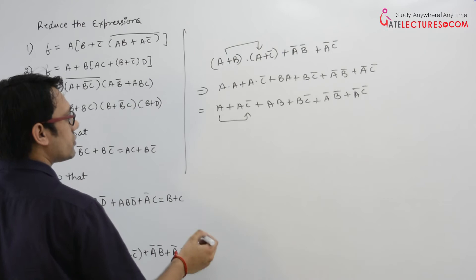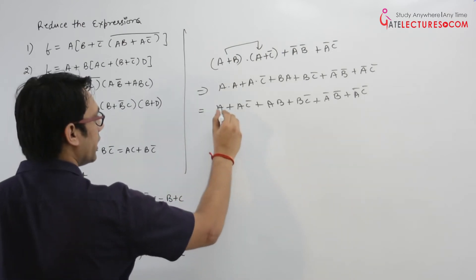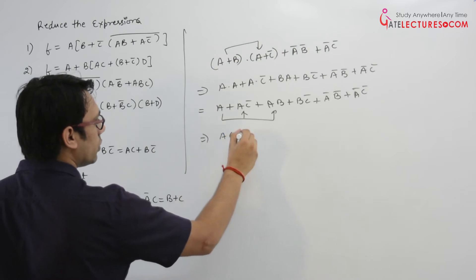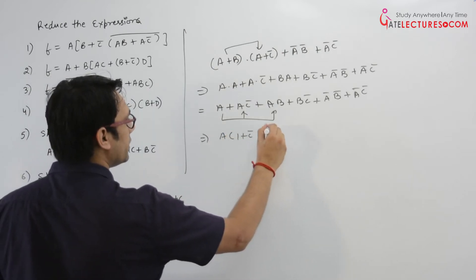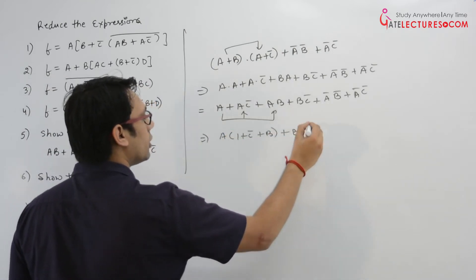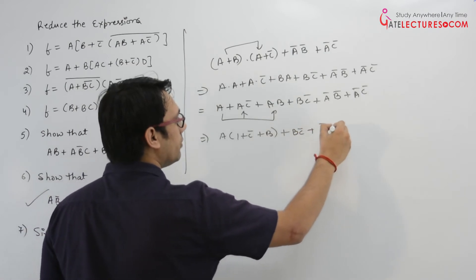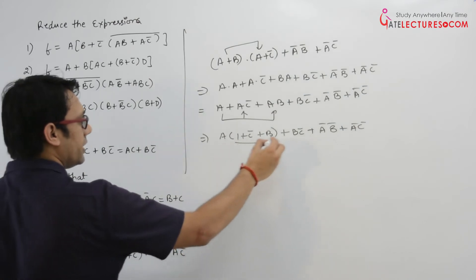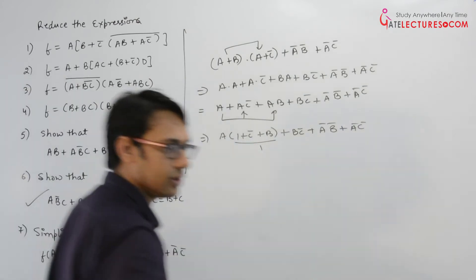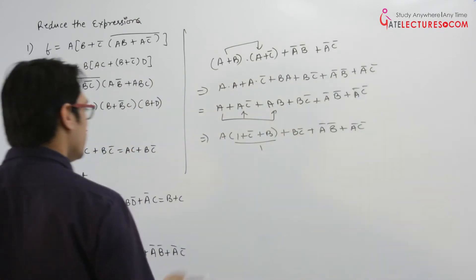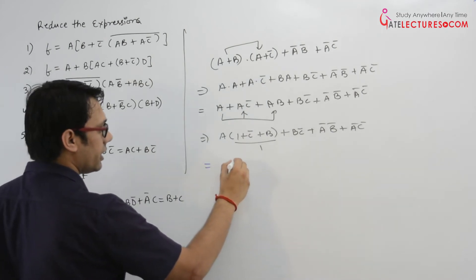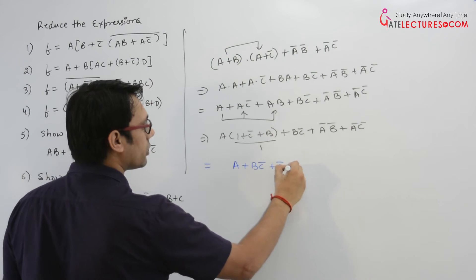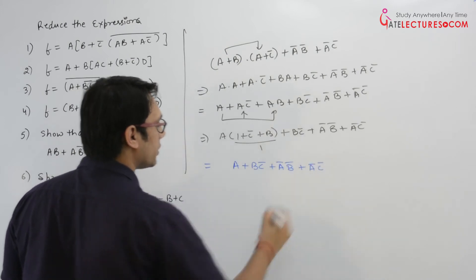You can take A as common between these two, or better, take A as common between these three. So if you take A as common, it is A times (1 plus C complement plus B) plus B C complement plus A complement B complement plus A complement C complement. Since 1 plus anything is 1, this whole bracket becomes 1. So it can be written as A plus B C complement plus A complement B complement plus A complement C complement.